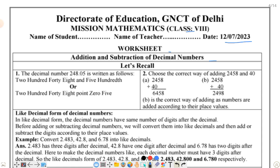Let us recall. The decimal number 248.05 is written as follows. 248.05 को इस तरह लिखा जा सकता है - 248 को तो 248 exactly लिखेंगे, और decimal के लिए 'and' लिख दिए, और place value के according 0 tenths and 5 hundredths भी लिख सकते हैं। या दूसरी तरफ, 248 point 0 5, यानि decimal के बाद separate करके पढ़ते हैं।